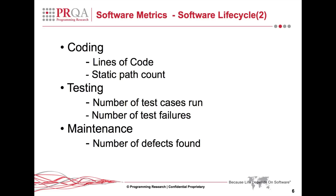The coding phase introduces probably the most well-known of software metrics, for example lines of code and static path count, which will be discussed later. Testing gives an indication of the quality of the software before it is released, but the values produced must be put in context. The number of test cases run needs to be related to the number of test cases available. Some values need to be fed back to earlier phases. The number of test failures may indicate a problem in the coding, design, or even requirements phase. Are the test cases correct? Is there something missing in the review stage? Is there something in the requirements which could have been misinterpreted?